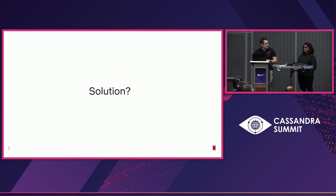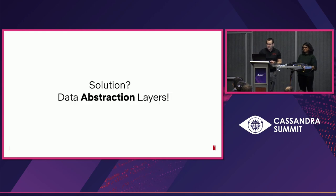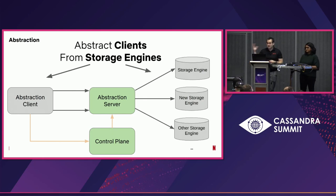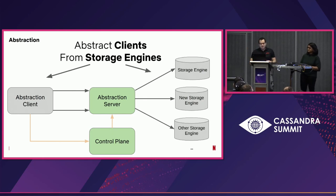So what's the solution? The solution we've deployed at Netflix is what we call data abstraction layers — essentially a layer of indirection between the abstraction clients or application servers and our storage engines. All things are solved by a good layer of indirection, right? We abstract our clients from the storage engines.